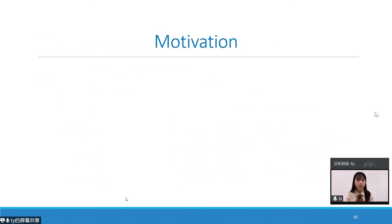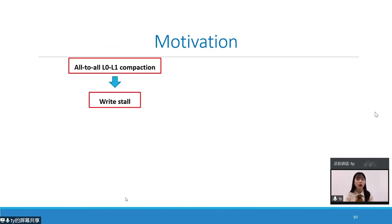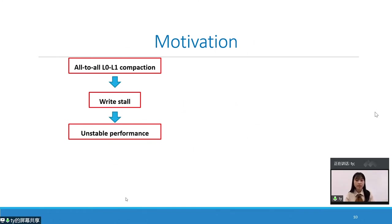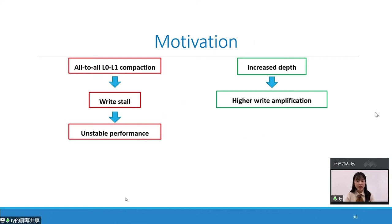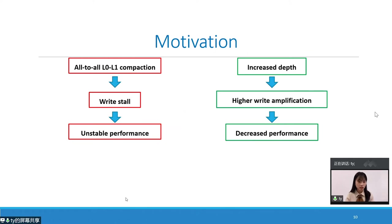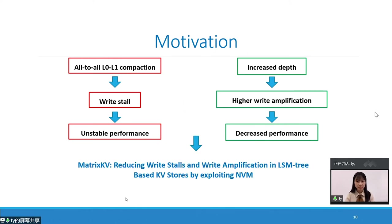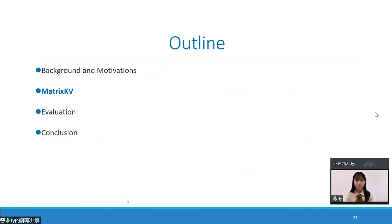From the above analysis, we conclude that the all-to-all Level 0 to Level 1 compaction is the main cause of write stall, which brings unpredictable and unstable performance. The increased depth of the LSM tree is the main cause of increased write amplification, which brings decreased system performance, especially decreased random write throughput. Motivated by these challenges, we propose MatrixKV, which aims to reduce write stall and write amplification in LSM tree-based KV stores by exploiting NVM. Next, we will see the design of MatrixKV.